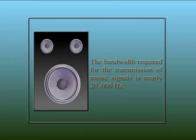If the signal to be transmitted is music, then the range of frequencies includes the lowest to the highest possible audible range, that is from 20 Hz to 20,000 Hz. This is because apart from the vocals, musical instruments produce sound varying from very low to very high frequency. The bandwidth required for transmission of music signals is therefore nearly 20,000 Hz.